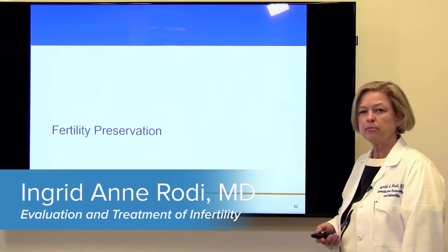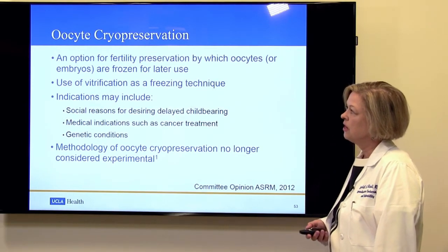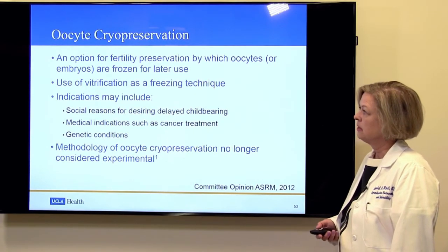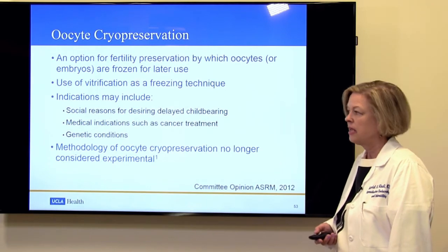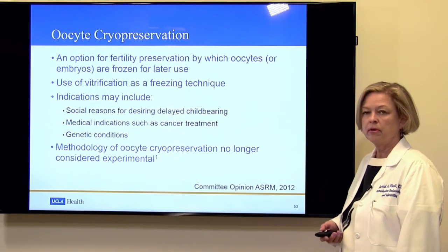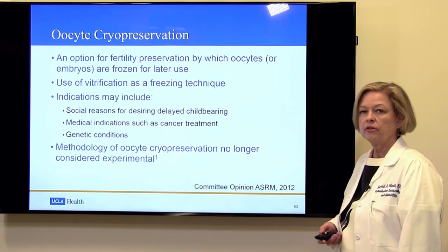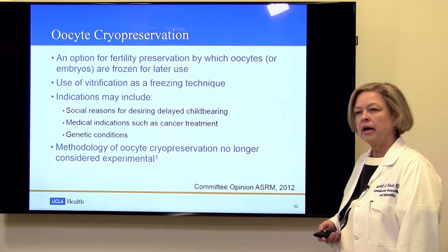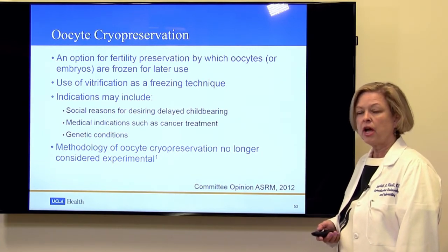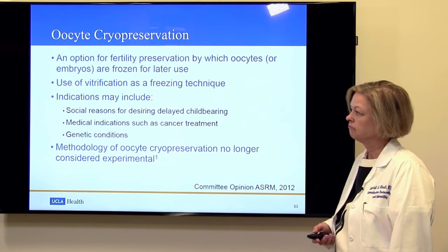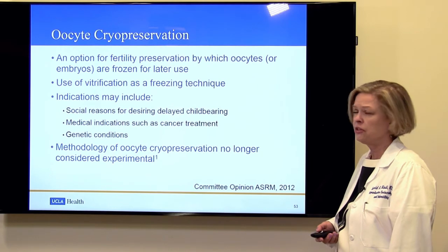Another topic is fertility preservation, which covers either freezing of eggs or freezing of embryos. The use of vitrification as a technique has increased the success rate of freezing eggs and embryos, making this a much more common recommendation. The indications include social indications — cases where a woman would like or has to delay childbearing for social reasons such as education, starting a job or career, or finding a partner — as well as medical reasons such as cancer treatment.